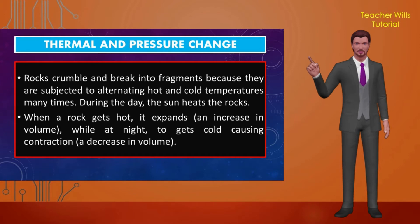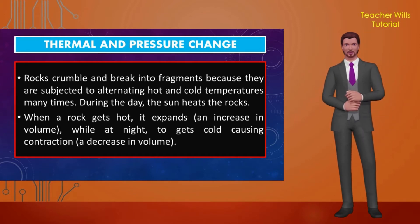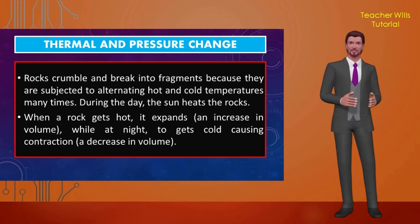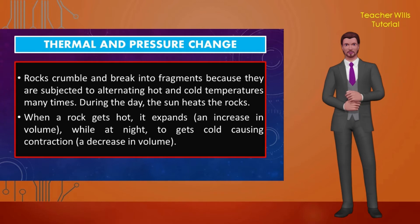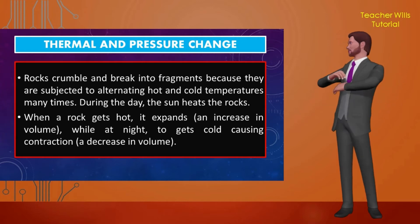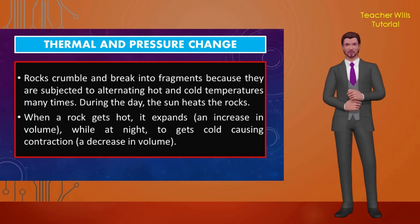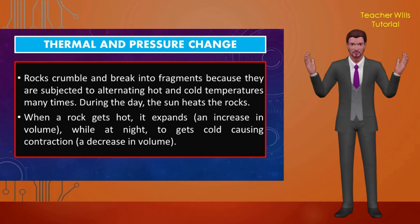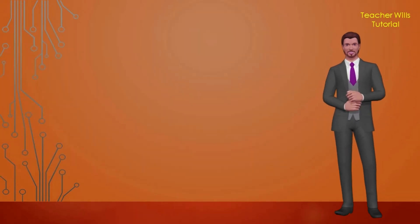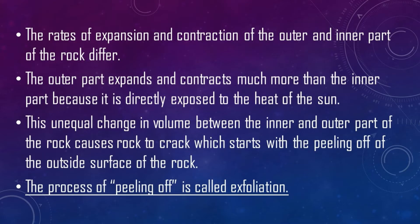Thermal and pressure change: rocks crumble and break into fragments because they are subjected to alternating hot and cold temperatures many times. During the day, the sun heats the rocks — when a rock gets hot, it expands, meaning there is an increase in volume. At night, it gets cold, causing contraction and a decrease in volume. Repeated swings in temperature weaken the rock, loosening mineral grains until the rock breaks down. The outer part expands and contracts much more than the inner part because it is directly exposed to the sun. This unequal change in volume causes the rock to crack, starting with the peeling off of the outside surface — a process called exfoliation.